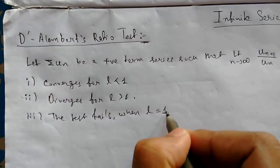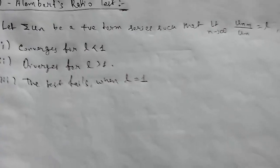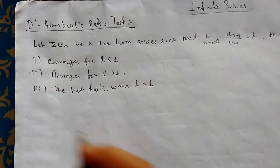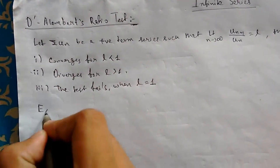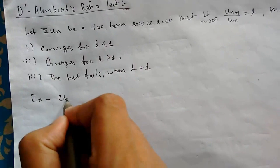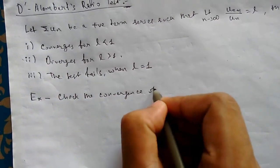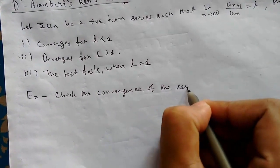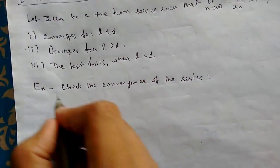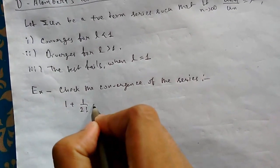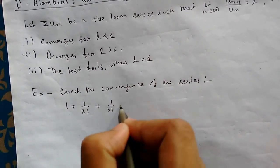So this is D'Alembert's ratio test. To understand this, let us take an example. Example: Check the convergence of the series 1 upon 2 factorial, 1 upon 3 factorial, up to infinity.